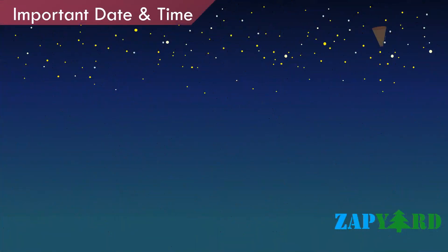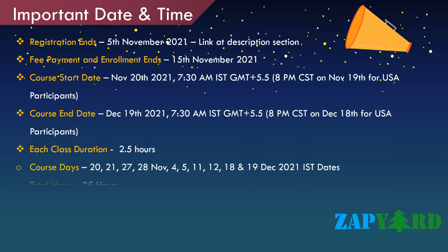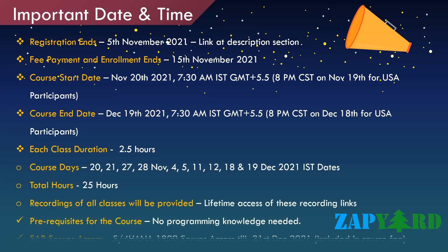Let us look at some important dates, times, and other information. The first day of training is November 20th, 2021 at 7:30 AM IST, which is GMT+5.5 hours. If you are in Europe, Africa, or West Asia, you might not be able to join the live classes. This time suits participants from the Indian subcontinent, East Asia, Australia, New Zealand, and North and South America. Registration is open until November 5th, 2021, and payment and enrolment must be complete by November 15th, 2021. Each class will be a little over 2.5 hours and the whole course will be a little over 25 hours.